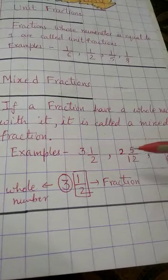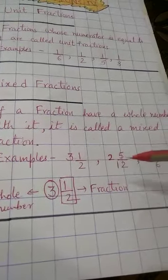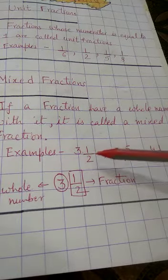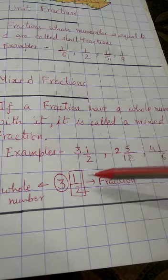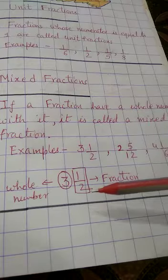Examples: 3 and 1 upon 2, 2 and 5 upon 12, 4 and 1 upon 6. You can see 3 is a whole number and 1 upon 2 is a fraction. That's why it is called mixed fraction - whole and fraction mixed together.